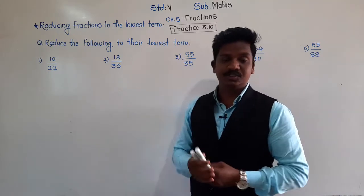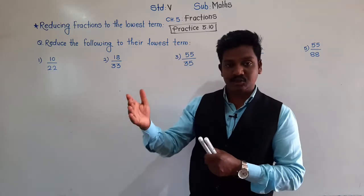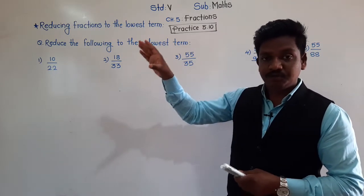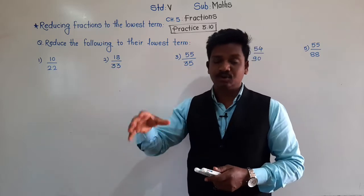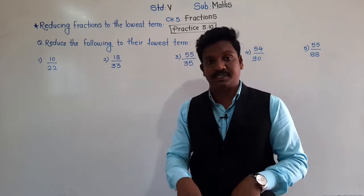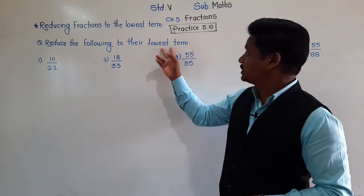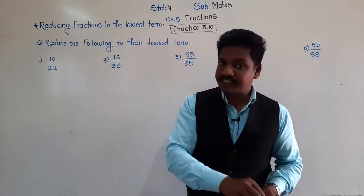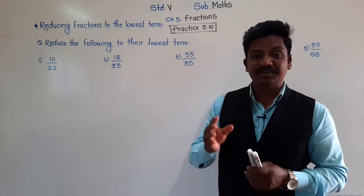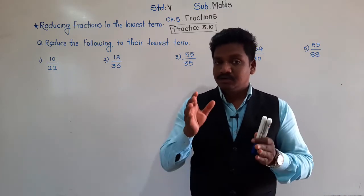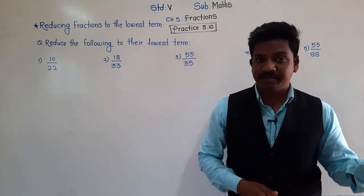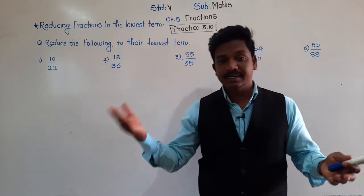Reducing fraction to the lowest term means what? Reducing means to make it least. The fractions which are given, we have to find their lowest term. Lowest term means we have to find its equivalent fraction which is lowest. And whenever we find an equivalent fraction, we can find it by using multiplication or by division.